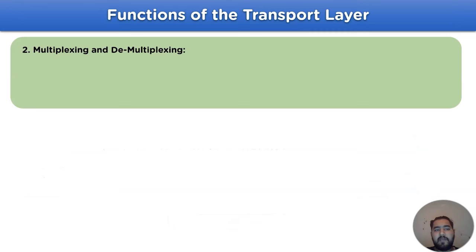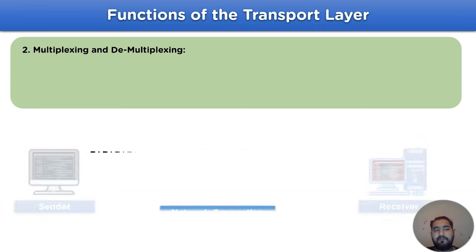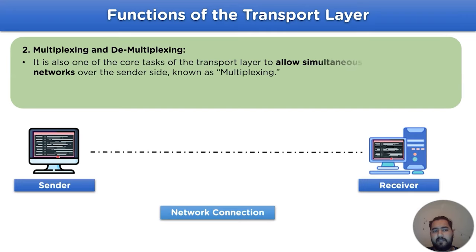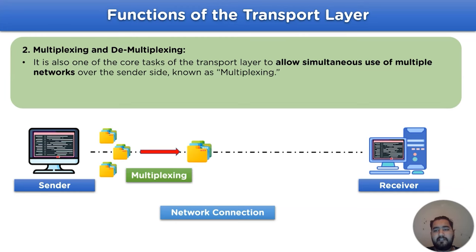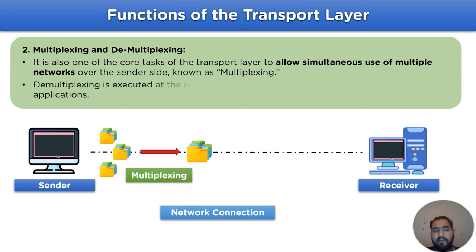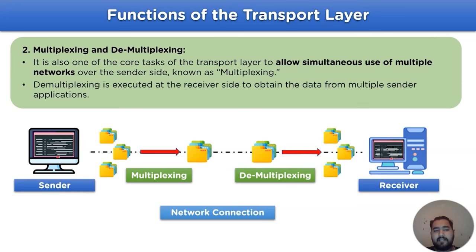The next function is multiplexing and demultiplexing. Multiplexing is one of the core tasks of the transport layer to allow simultaneous use of multiple networks on the sender side. Demultiplexing is executed at the receiver end to obtain data from multiple senders' applications.